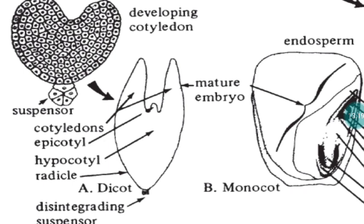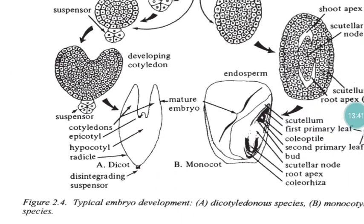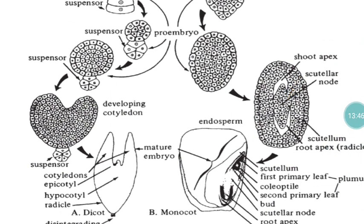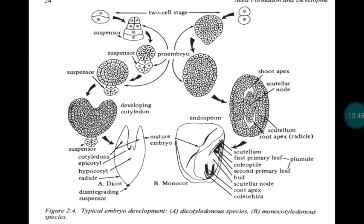The dicot will have tissues corresponding to the cotyledon, epicotyl region, hypocotyl region, the radicle region, and the plumule region. Epicotyl means the region above the cotyledon leaf; hypocotyl means the region below the cotyledon leaf. I will give more clarity about epicotyl and hypocotyl when we discuss seed structures.